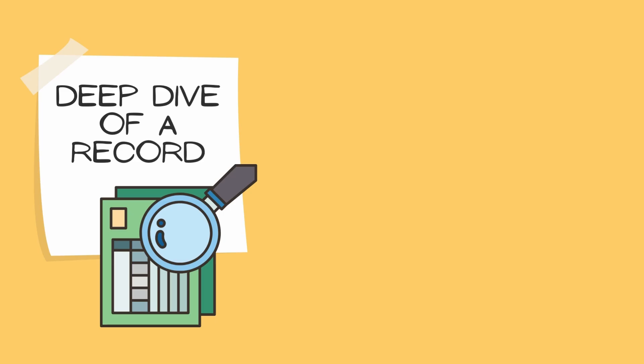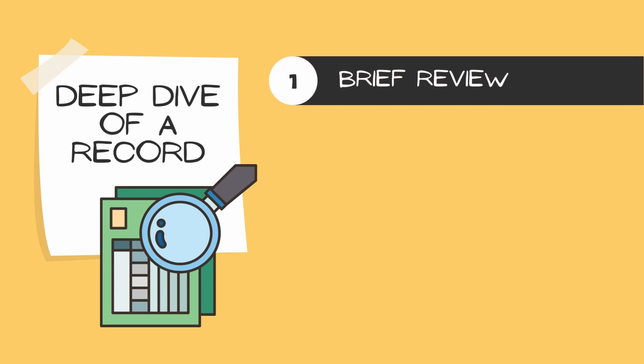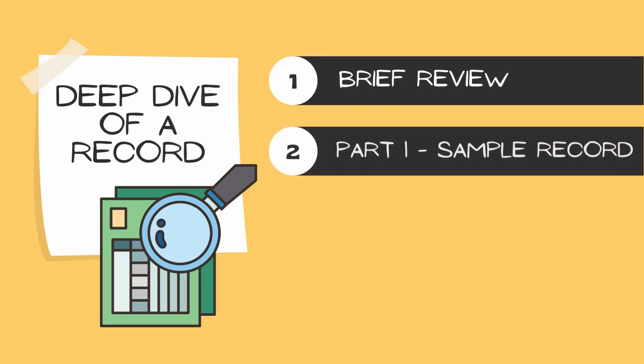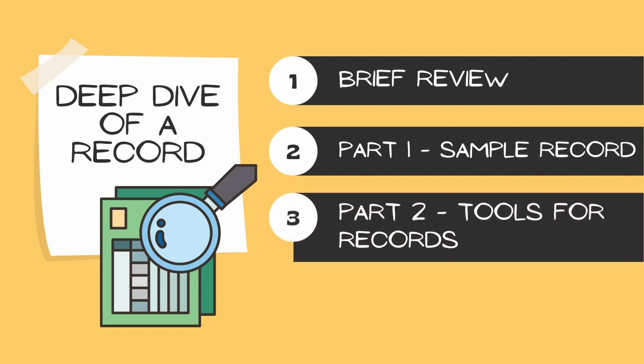In this video we'll take a close look at records. First we'll briefly review how records work in databases. Then we'll walk through all of the fields of a sample record and discuss which fields are common across most databases. Then we'll learn about the tools databases provide when you're viewing a record — tools to help you share, cite, download, or request an item.